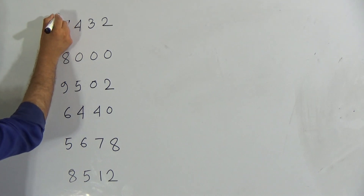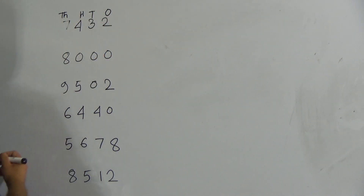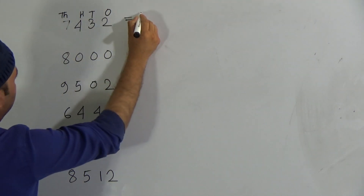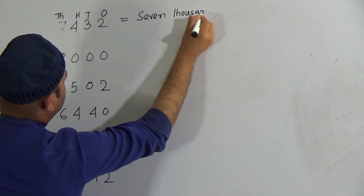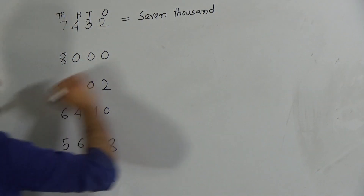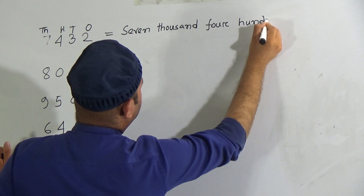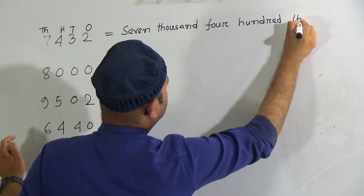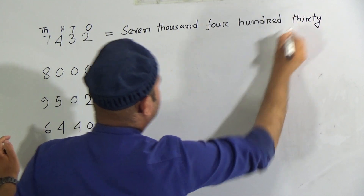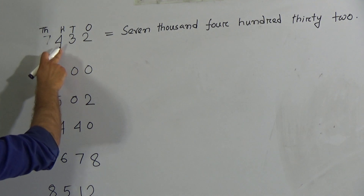Here are some numbers. The first one: 7 is in the thousand place, 4 is in the hundred place, 3 is in the tens place, and 2 is in the ones place. So in words we write: seven thousand, then four hundred, then thirty, and two ones. So the full number in words is seven thousand four hundred thirty-two.